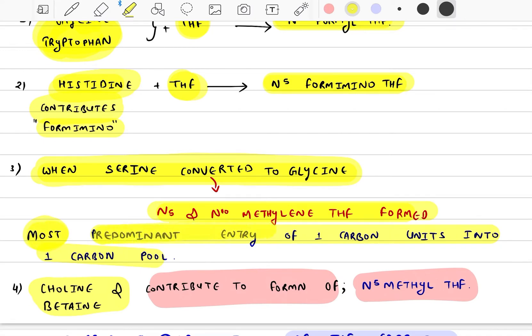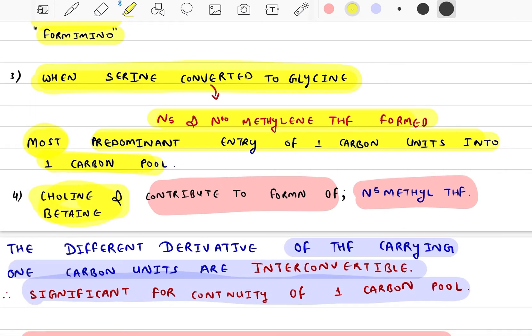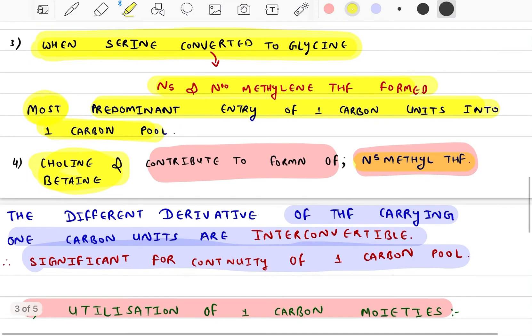This is the most predominant entry of one carbon units into the one carbon pool. Choline and betaine contribute to N5 methyl THF.